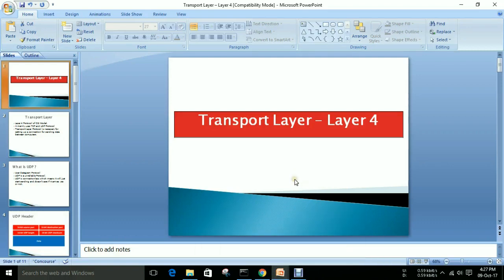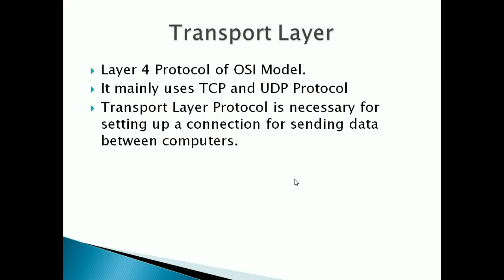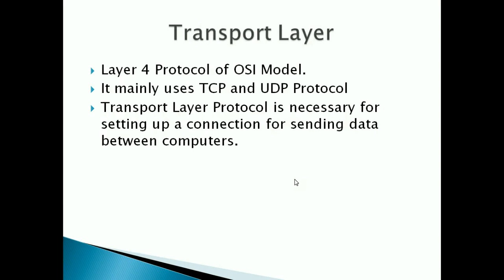In this video, we'll look at the transport layer protocol. It is Layer 4 of the OSI model and mainly uses TCP and UDP protocols for data transmission. The transport layer protocol is necessary for setting up a connection between two devices in order to communicate and transfer data. Let's first look at TCP and UDP.